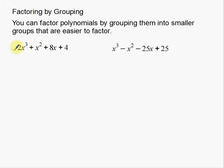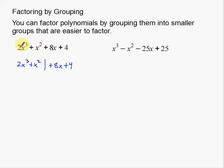So what I'm going to do is take this polynomial and split it into two groups — that's why we call it factoring by grouping. For the most part, the two left terms are going to be your one group and the two right terms are going to be your second group. I'm going to factor them individually, and that's why we call it factoring by grouping.